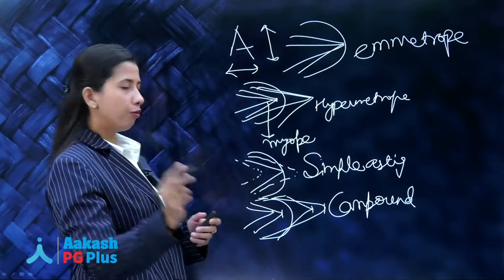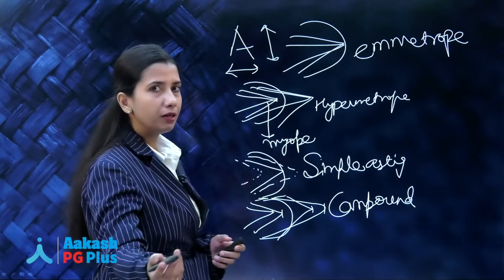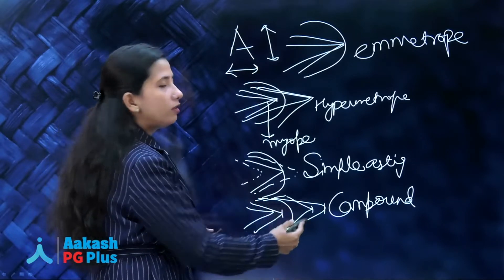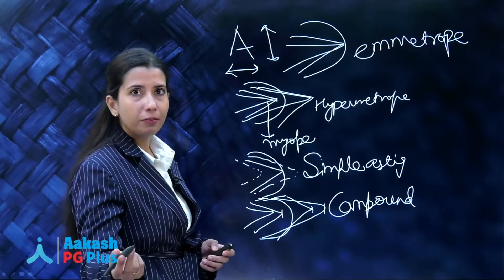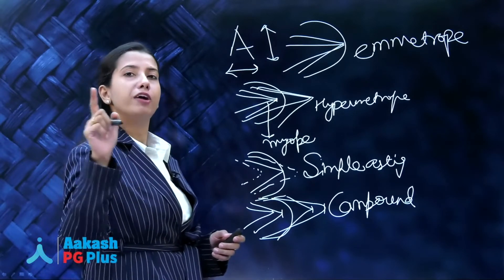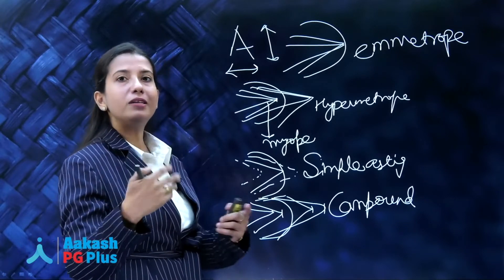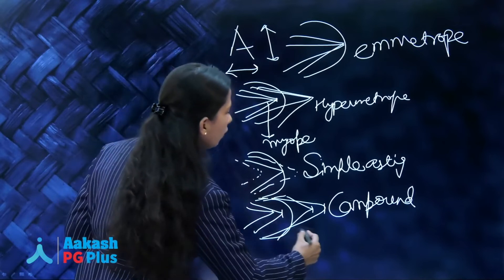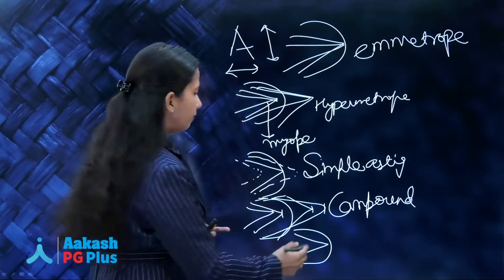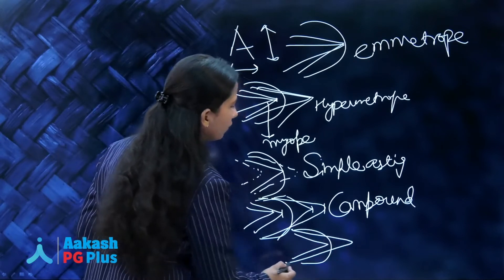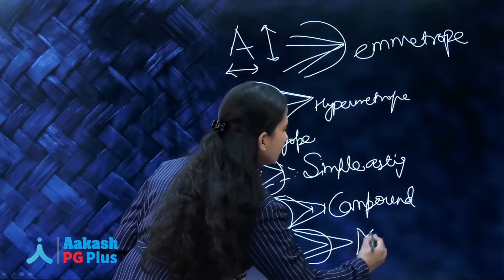When both of them are focusing in front of the retina, it is compound myopic astigmatism. If both are focusing behind the retina, it is compound hypermetropic astigmatism. We also have mixed astigmatism, where one bundle focuses in front and one bundle focuses behind the retina.